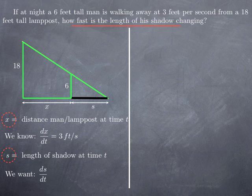We know the rate of change of one. We want the rate of change of the other. As usual, the first step is to find an equation that relates these two quantities, x and s. And then we'll differentiate with respect to time to get an equation that relates the rates of change.